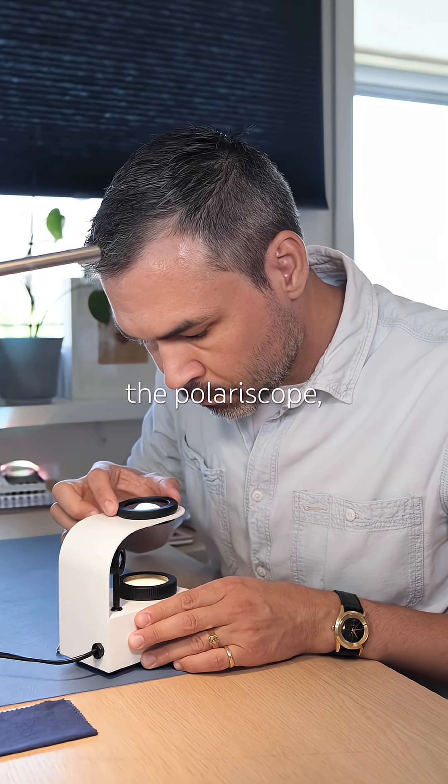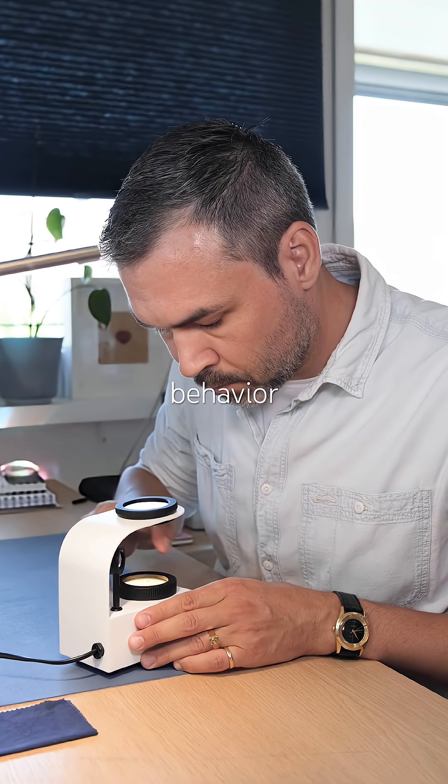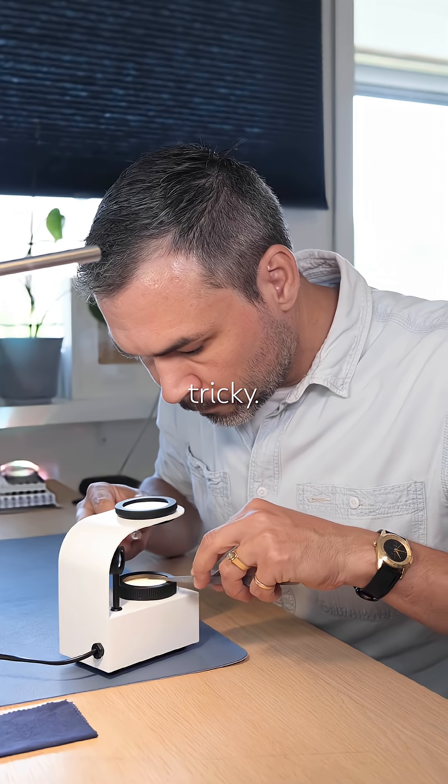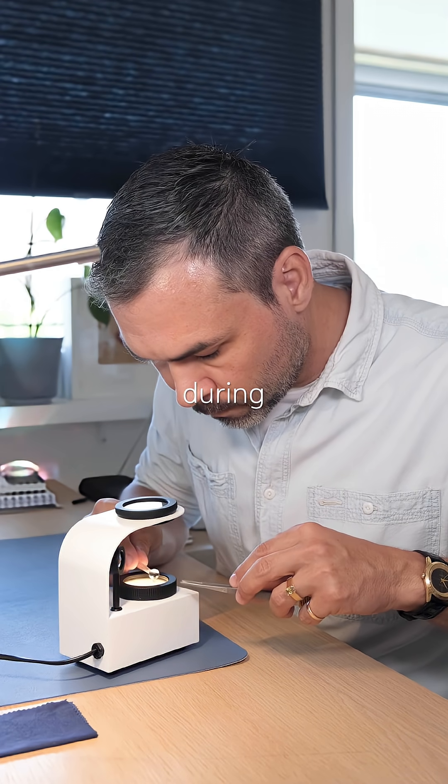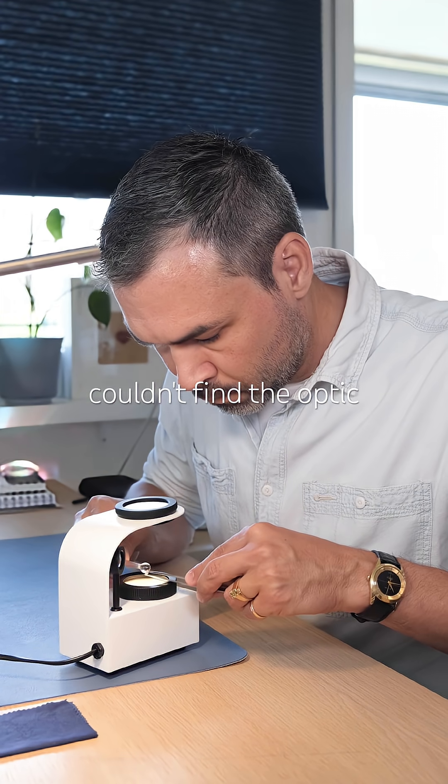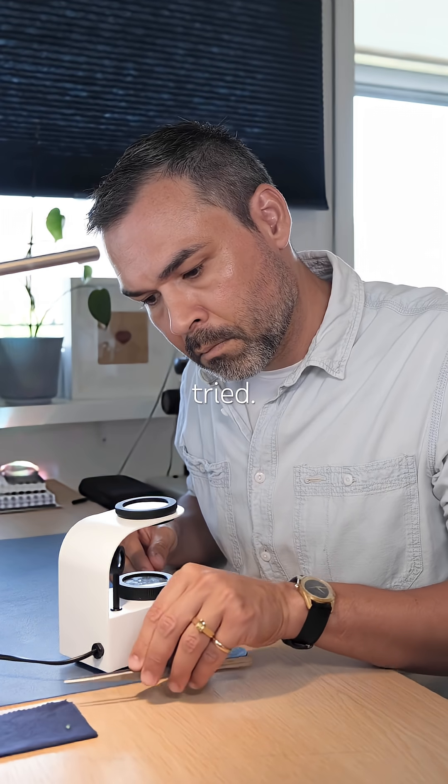Under the polariscope it shows anisotropic behavior, though its internal structure makes the light path a bit tricky. It blinks four times during a full rotation, but not very distinctly. I couldn't find the optic axis, but at least I tried.